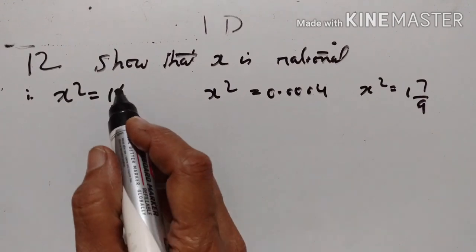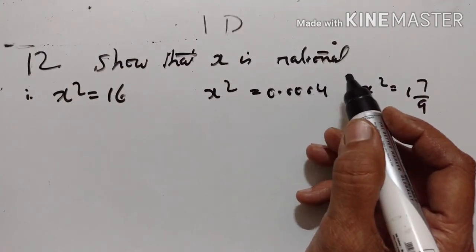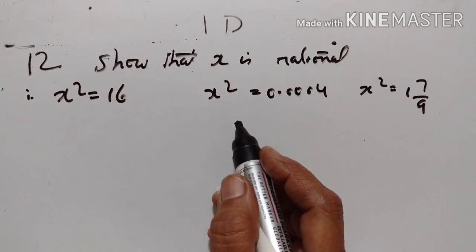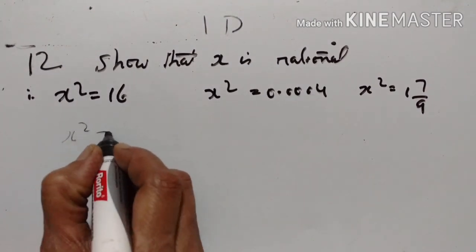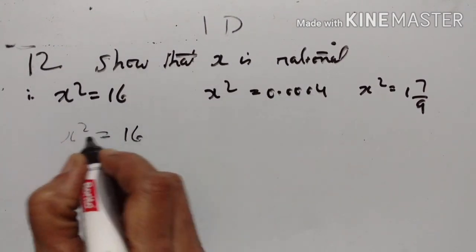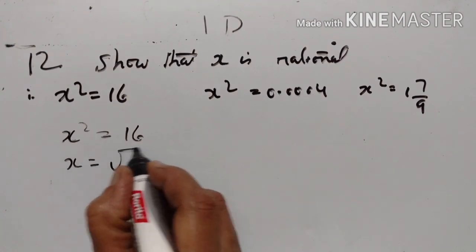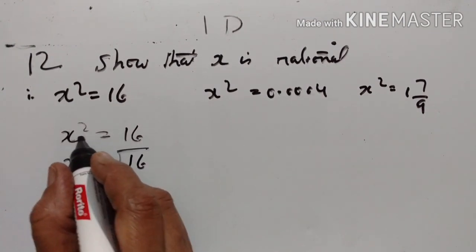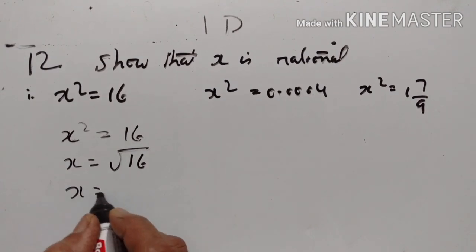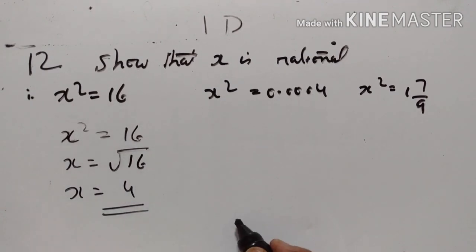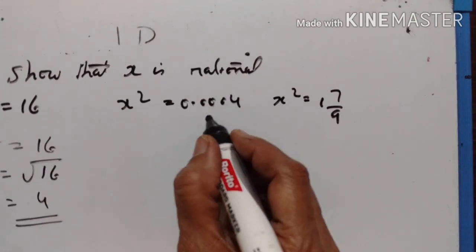Exercise 1D, 12th problem: show that x is a rational number if x squared is equal to 16. So x squared equals 16, therefore x equals the square root of 16. Taking square root on both sides, x equals 4, which is a rational number.